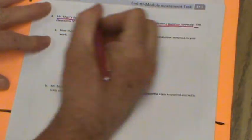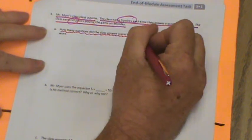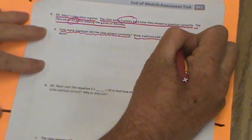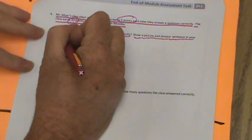All right, let's continue. Mrs. Meyer's class plays a game. We know that. The class earns five points each time they answer a question correctly. Five points. The class earns 50 points playing the game on Monday. So they earn five points per correct answer. So our question is, how many questions did the class answer correctly?